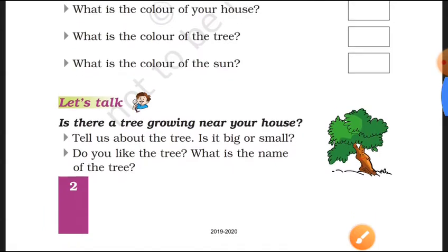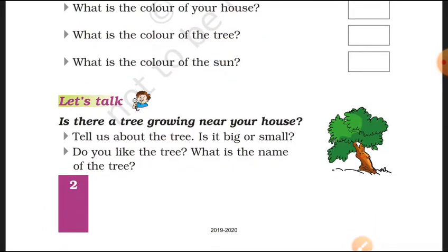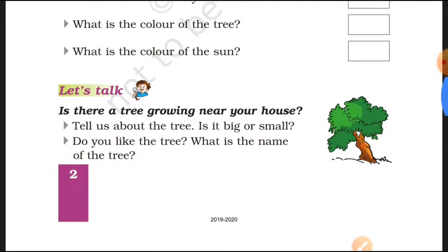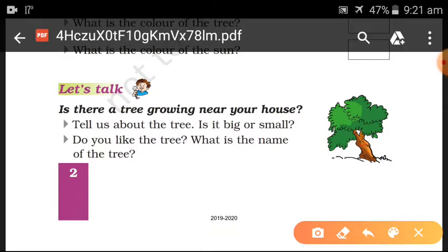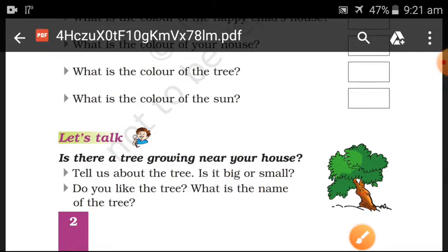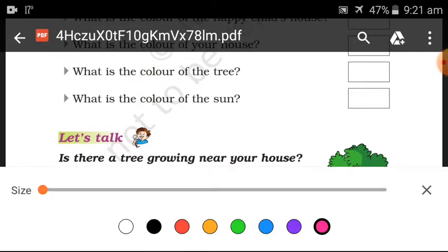Then what is the color of the tree? What color should be the tree? So we will write. What is the color of the tree? Green. Trees are green. Then we will add green.